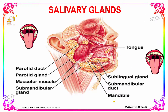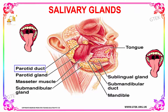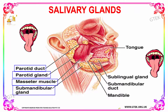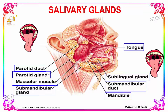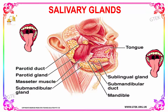Next, we are going to see about the salivary glands. Your salivary glands have the following parts: the parotid gland, the submandibular gland, the sublingual gland, the submandibular duct, the mandible, and the tongue. These are the parts which help in the secretion of saliva and thus in the digestion process.